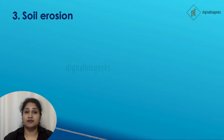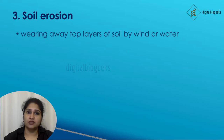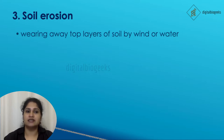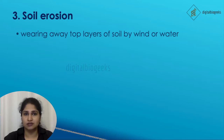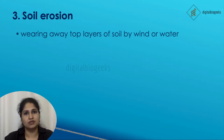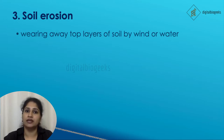Another after-effect of deforestation is soil erosion. Soil erosion refers to the wearing away of top layers of soil by wind or water. When trees are present they prevent soil erosion, as they restrict the flow of water, and the tree roots absorb water into the ground and hold the soil in position.